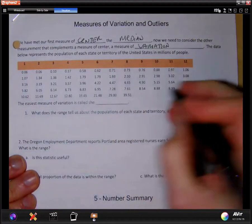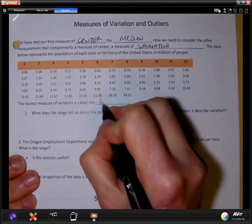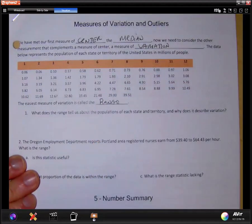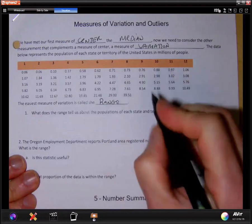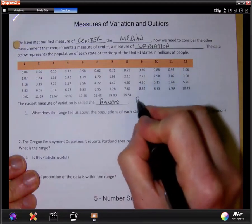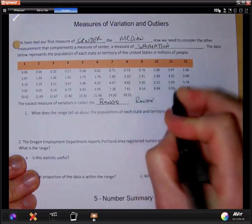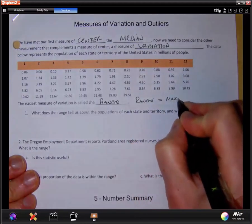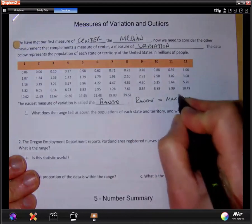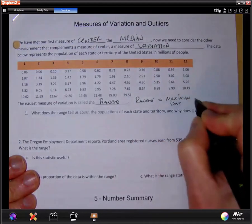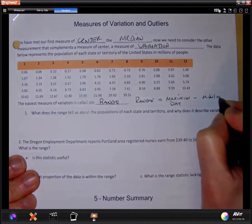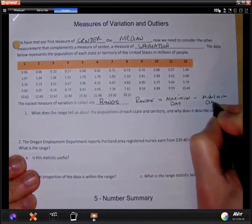So the easiest measure of variation is called a range, which you have heard me mention a few times already. But what is officially the range? The range, as a measure of variation, is just going to be maximum data point minus the minimum data point. That's simple enough.